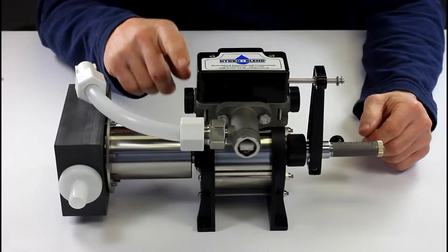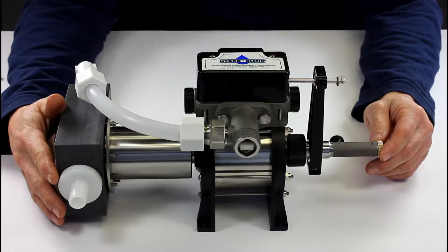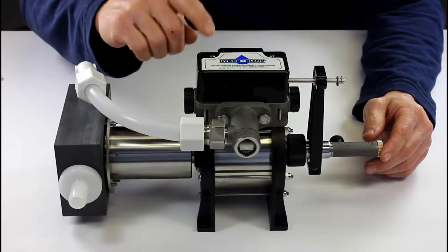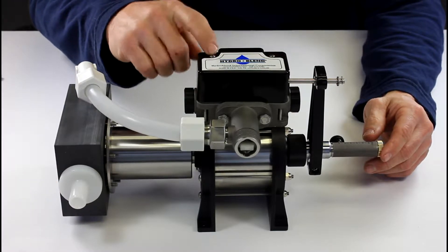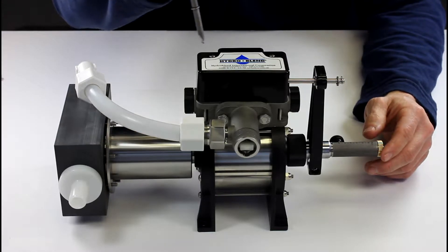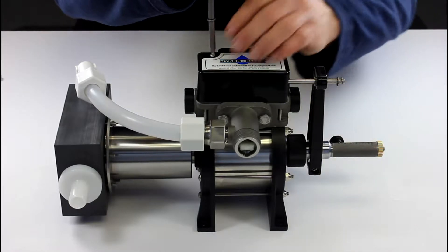Today we're going to remove the valve block off your hydro blend proportioner. The first step is to remove this black cover using a standard screwdriver and loosen the screws up.